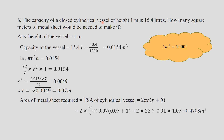Radius = 0.07 m, height = 1 m. To find how much metal sheet is required, calculate total surface area of the cylindrical vessel: 2 pi r (r + h) = 2 into 22/7 into 0.07 multiplied by (0.07 + 1). The answer is approximately 0.470 meter square.